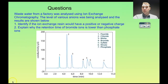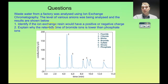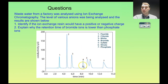The last example question: wastewater from a factory is analyzed using ion exchange chromatography to measure levels of various ions. First, identify whether the ion exchange resin has a positive or negative charge — since all the substances listed are negatively charged anions, the resin must have a positive charge, otherwise there would be no separation. Second, why is the retention time of bromide ions lower than that of phosphate ions? Bromide ions (Br⁻) have a single negative charge, while phosphate ions (PO₄³⁻) have a 3− charge. Bromide ions pass through quicker because they have a lower charge and don't absorb as strongly onto the positively charged resin, whereas phosphate ions absorb more strongly and take longer to pass through the column.